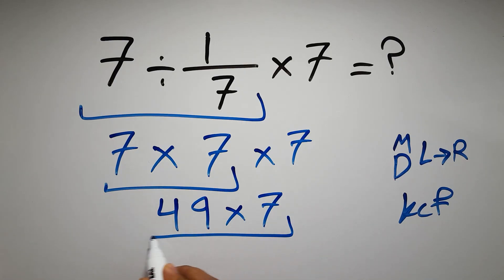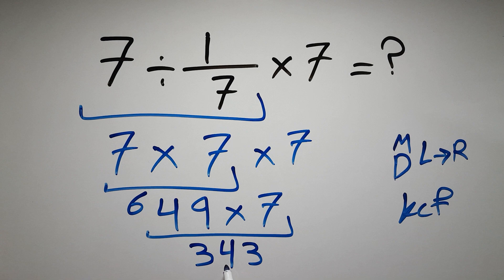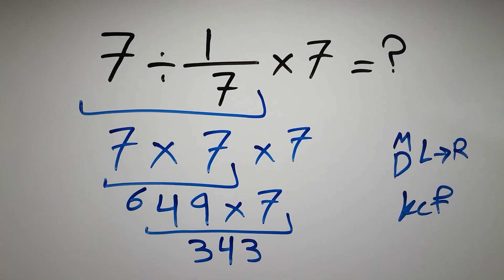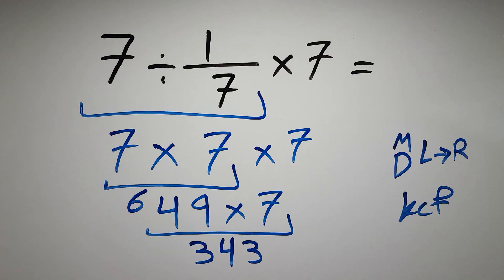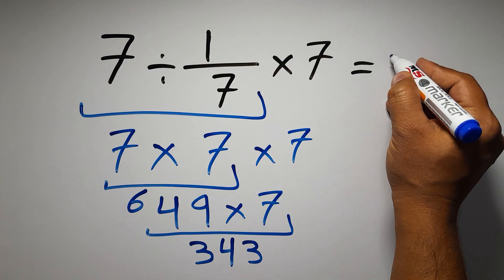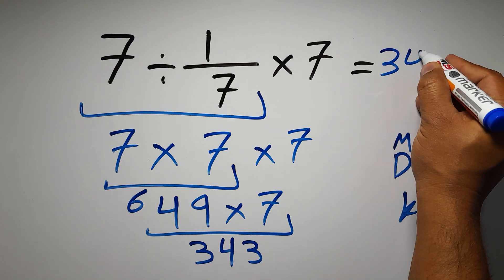Seven times nine gives us 63. We write three here and carry six here. And then seven times four gives us 28. 28 plus six gives us 34. So we have 343, and this is our final answer to this problem. The correct answer is 343.